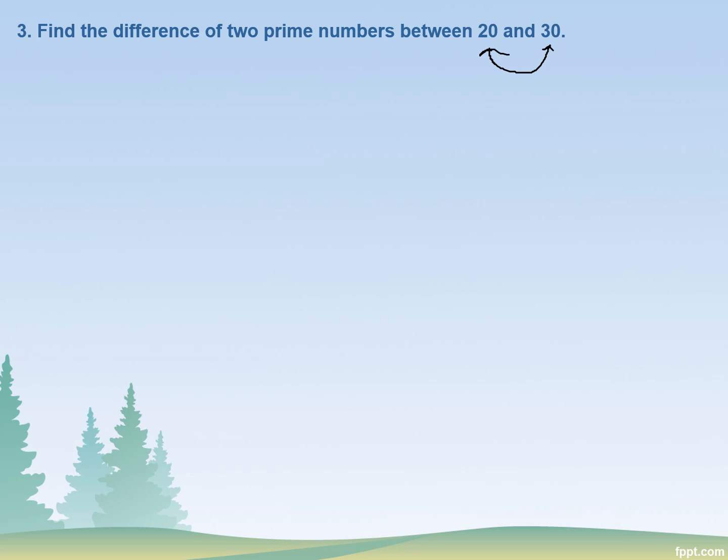And we have to find the difference, that means we have to subtract those numbers. In the question, it is already told that there are two prime numbers, that means there are only two prime numbers between 20 and 30.